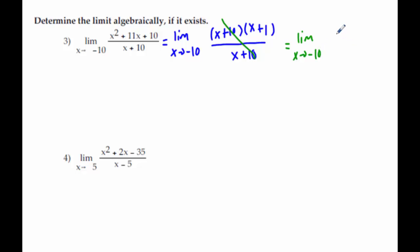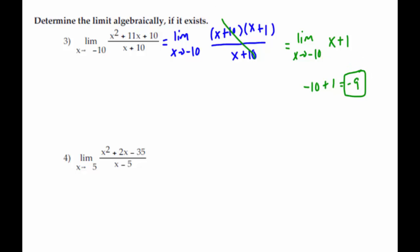If it says algebraically it should be convenient — technically there's a small chance it's not, because it does say 'if it exists,' but I'm probably going to give you one where it's supposed to cancel out. Now, because we don't have an issue on the bottom with plugging in negative 10, we can just plug it in: negative 10 plus 1 is negative 9. And number four is really similar — we're just going to factor and plug in.